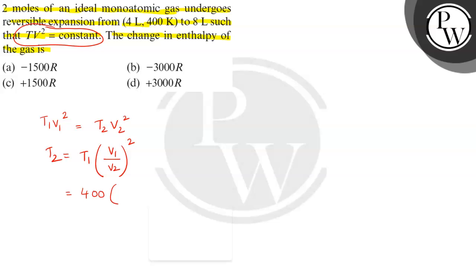And V1, initial volume, is 4 liters, and final volume is 8 liters. So 4 by 8 whole square. This gives us 100 Kelvin. This is T1, T2 we have calculated.